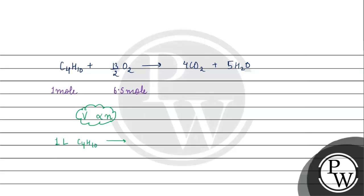So let's see. We will react with 6.5 mol of O2, which means we react with 6.5 into 100 ml of O2, giving us 650 ml of O2.